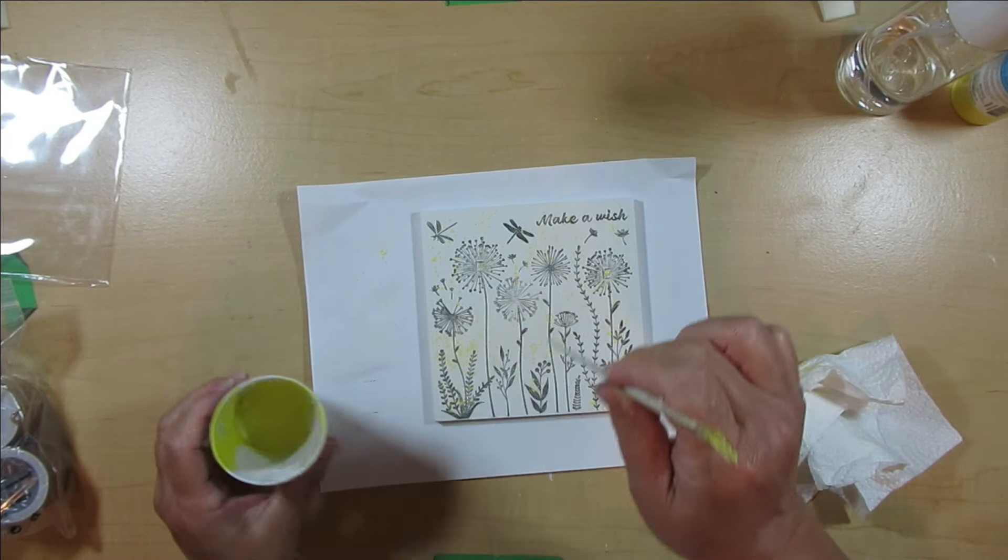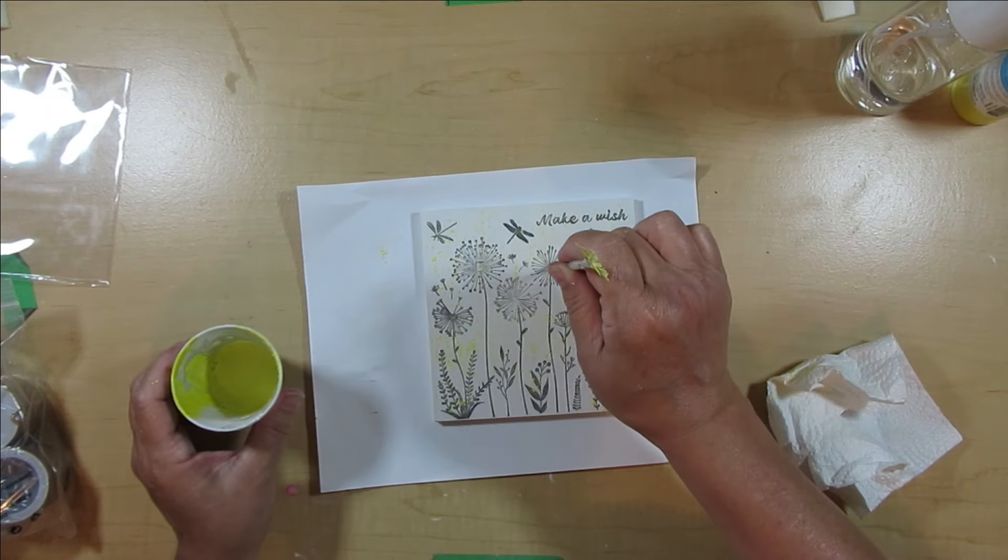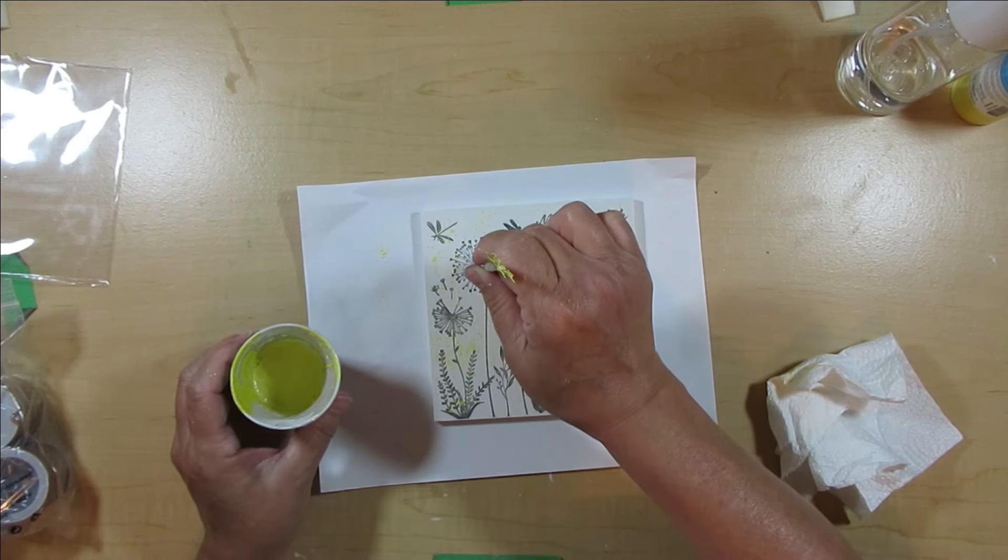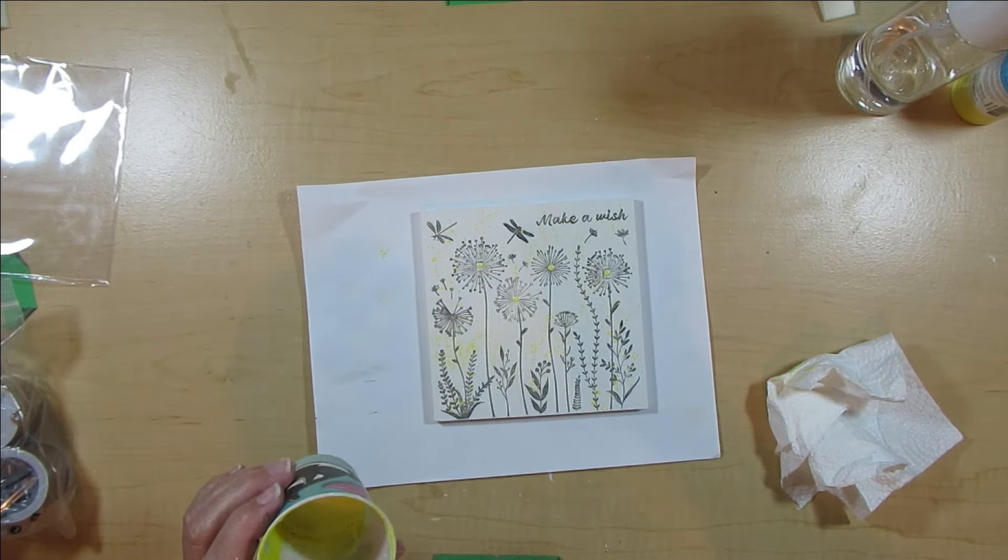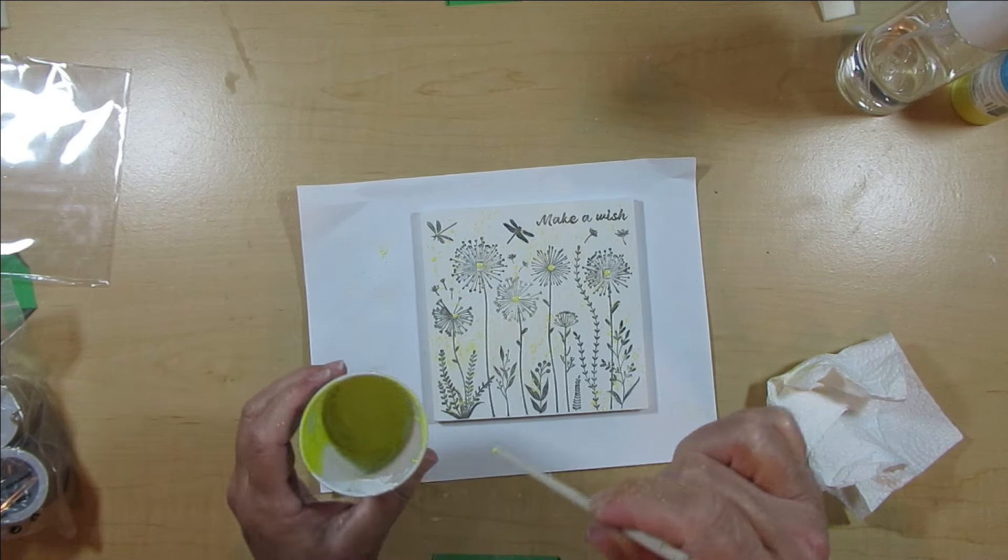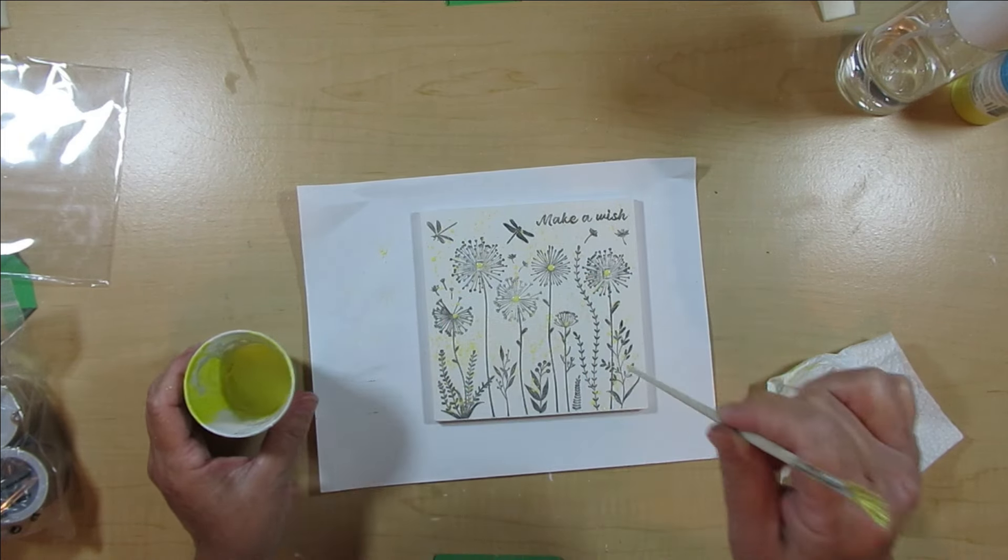Now using the end of my paintbrush, I'm dipping it into the same yellow paint mixture and I'm just doing a little dot inside each of the dandelions. I just thought that looked so cute and just brought out a little bit more of the character of each of these little flowers.